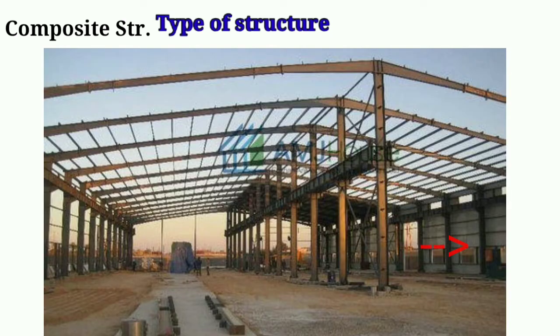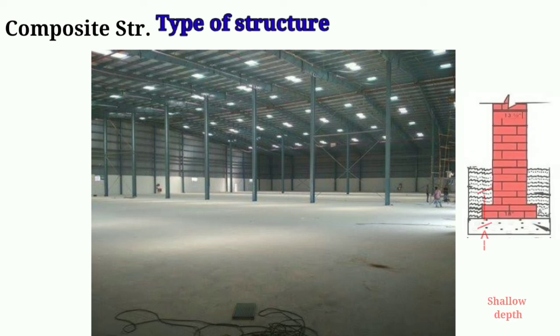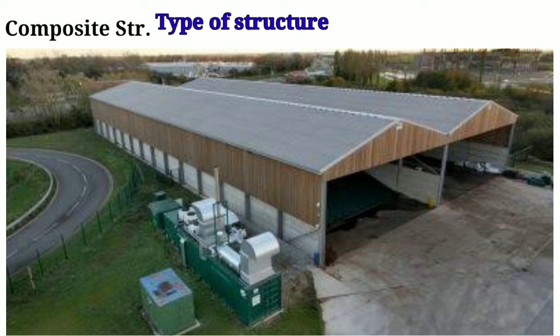Composite structures are a combination of load bearing and frame structures, in which load bearing walls are provided externally and the columns and beams of a frame structure are provided internally. The floor or roof rests on both the load bearing and frame structure elements. Composite structures are suitable only where hard strata is available at shallow depth, as the external wall is load bearing. Most warehouses and industrial sheds are constructed as composite structures.